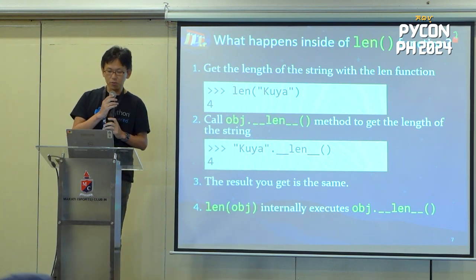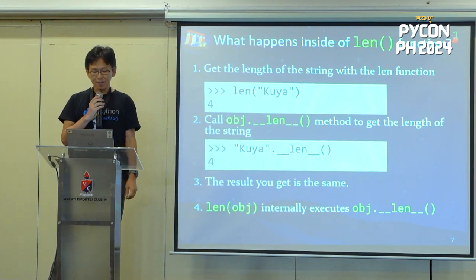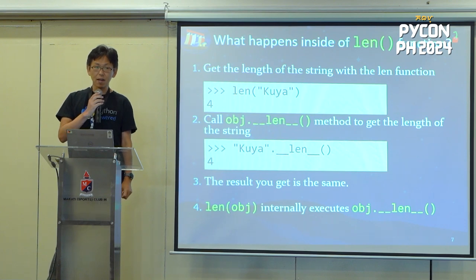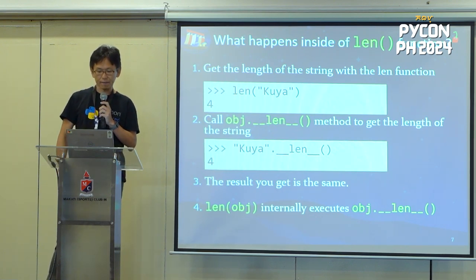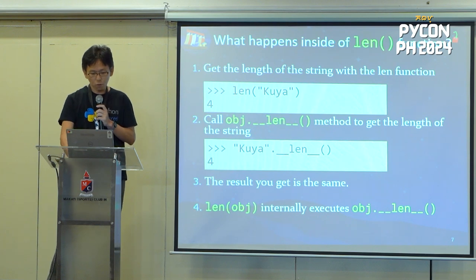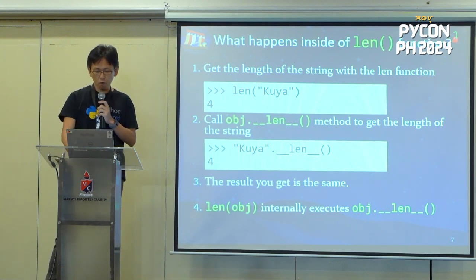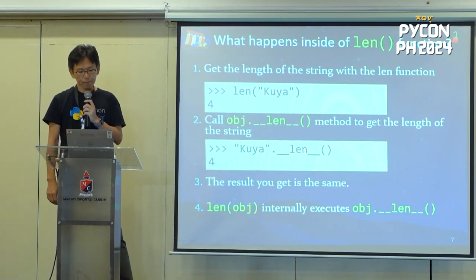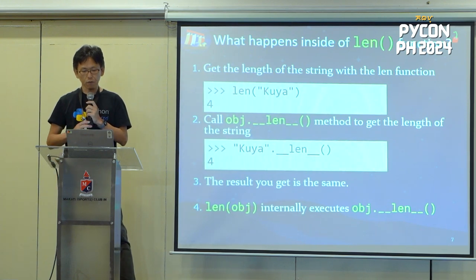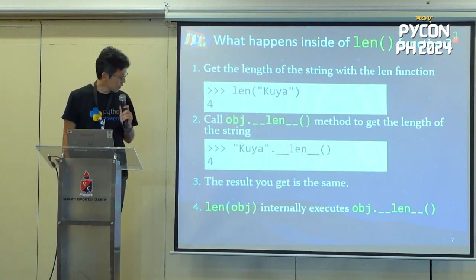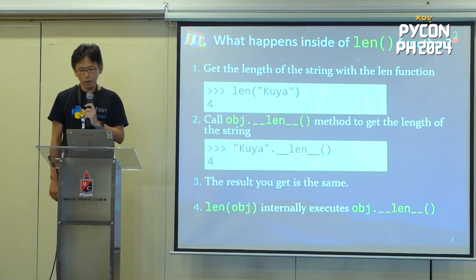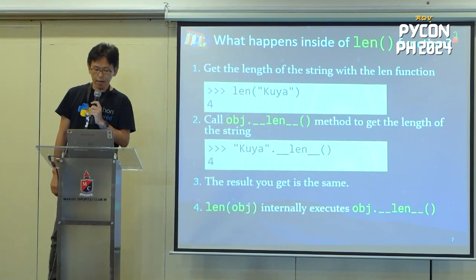It's too long to speak — it's called the dunder len method. Double underscore len method. So when you call `__len__()` on it, it's returned. This is the same as the first result. Actually, `len(object)` internally executes `object.__len__()` method.